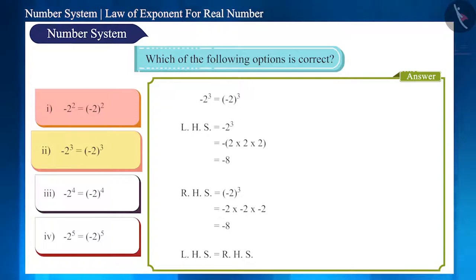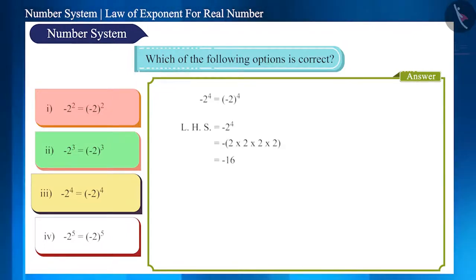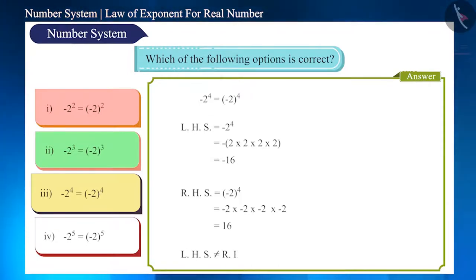So this option is correct. In the third option, on the left side, the power of minus 2 is 4. Its value is minus 16. But on the right side, the power of minus 2 in bracket is 4, and its value is 16. Here the left hand side is not equal to the right hand side.